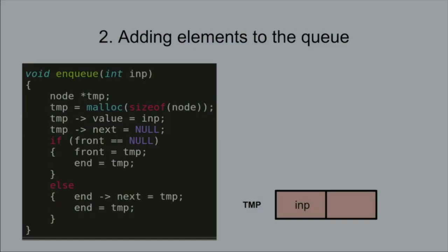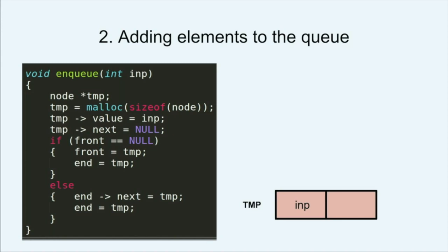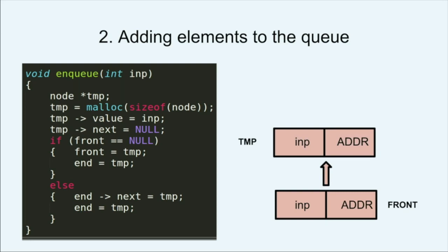Let's see how elements will be added to the queue. Upon each call to the function enqueue, a new node tmp is created which holds the value to be stored, passed as inp, and is made to point to null. If it is the first node, then both the end and the front pointer will point to this node. As more nodes are added, the end pointer updates. Notice that the last element will point to null. This is unlike the stack, where the first node points to null.